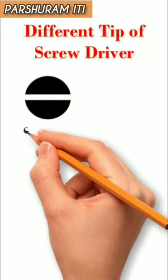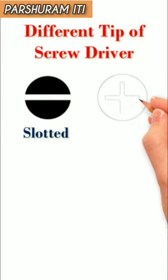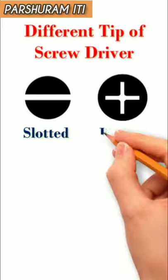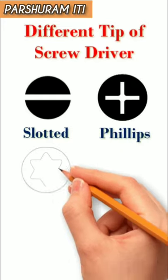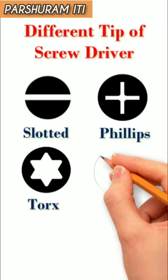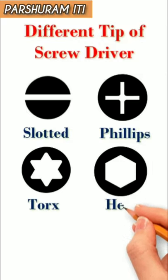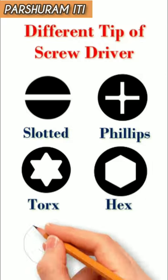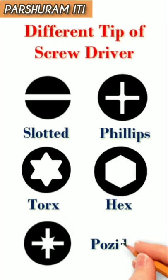The first one is the slot type. The second type is the plus type. The third one is called the Torx screwdriver. The hex screwdriver is called hex screwdriver. The last one is called positive.